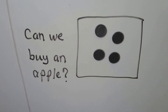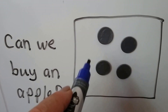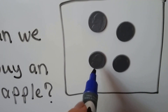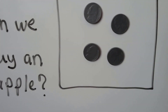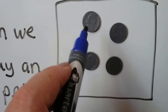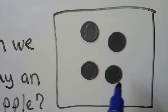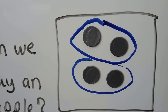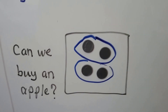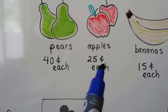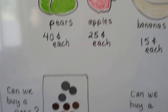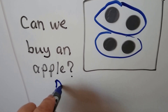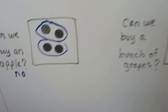How about the money in this box — can we buy an apple? We have four nickels. Let's count by fives: 5, 10, 15, 20. Remember, two nickels makes a dime, so we have two dimes — that's 20 cents. Apples are 25 cents each, and we only have 20 cents, so no, we don't have enough money to buy an apple.